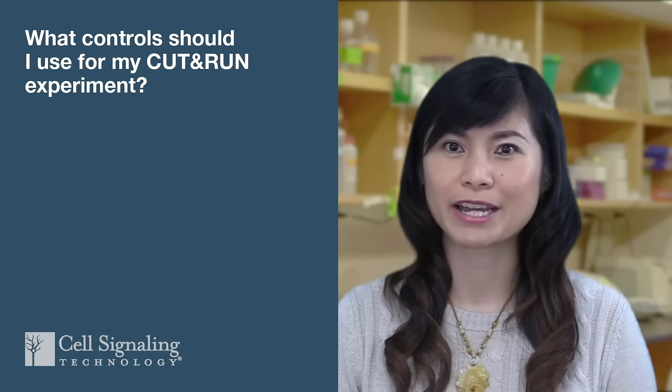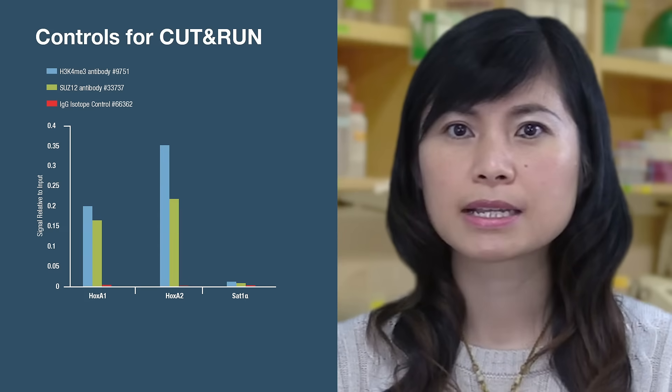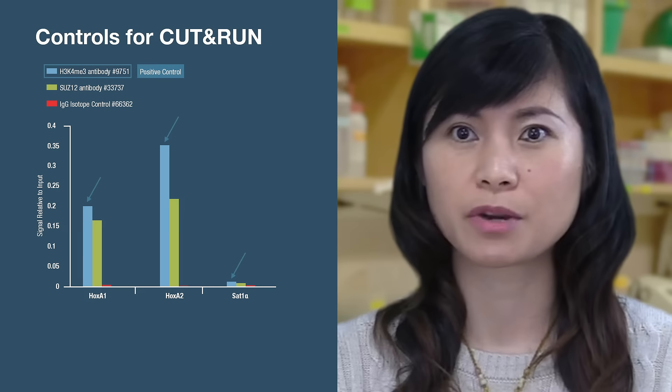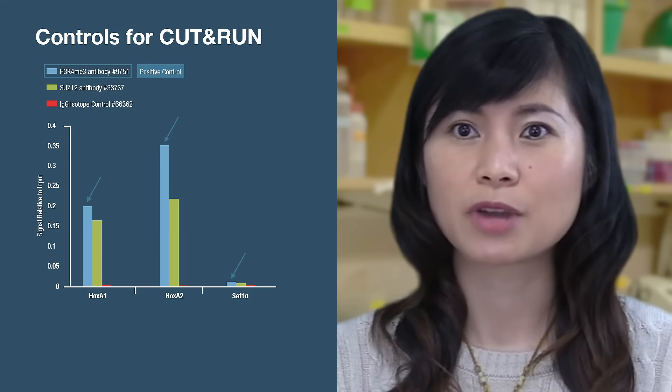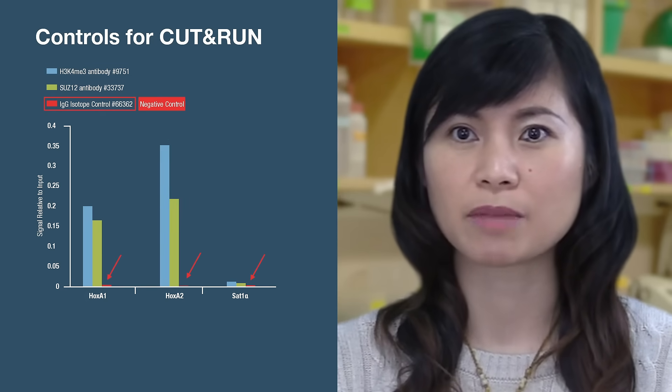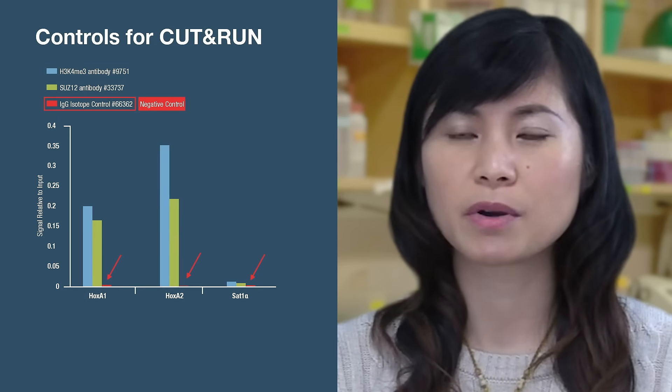Which brings us to our next question: what controls should I use for my CUT&RUN experiment? We recommend including both positive and negative controls to confirm your protocol is set up correctly and to help troubleshoot if you don't get expected results. For example, if your target protein is SUZ12, include a CUT&RUN-validated positive control antibody to a target known to bind chromatin, such as a trimethyl histone H3 lysine 4 antibody, and a negative control antibody such as an IgG isotype control, and compare the signal to your target against both controls.